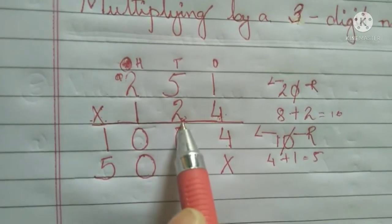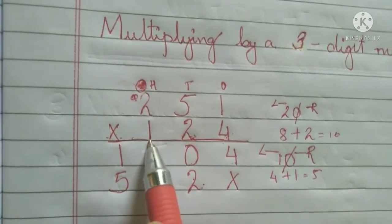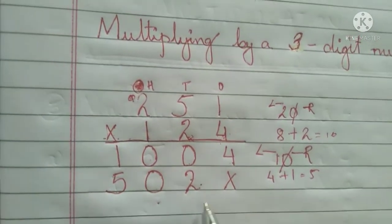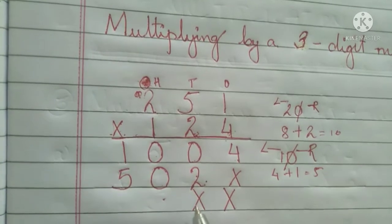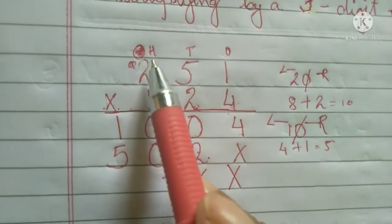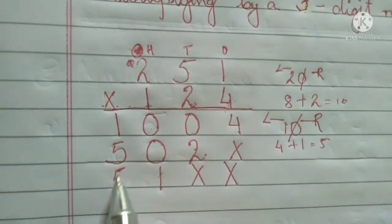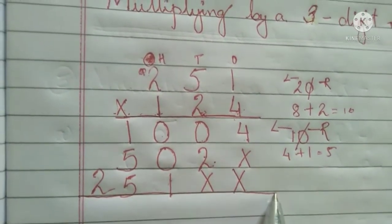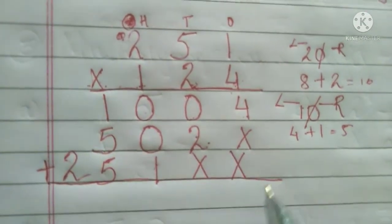Now let's try with a three-digit number. I've written 124 here. You can see one is in the hundreds place, which means we start from the hundreds place — we don't write anything in the ones place or tens place, so we cross those out. Since one is at the hundreds place: one times one equals one, one times five equals five, one times two equals two.